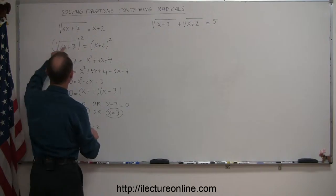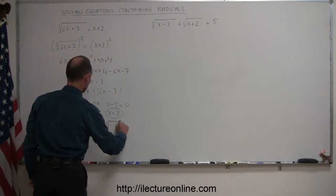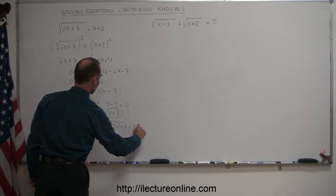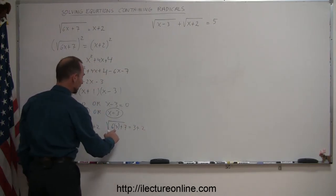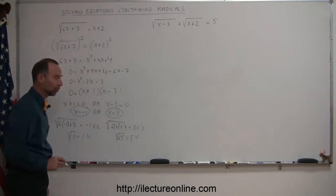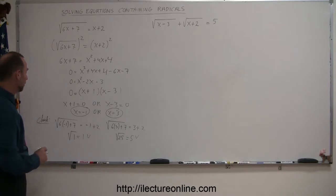Plug in the other possible solution, so we get the square root of 6 times 3 plus 7 equals 3 plus 2. Let's check that out. This would be 18 plus 7 is 25, so the square root of 25 equals 5, and that checks out as well. So both solutions are permissible.